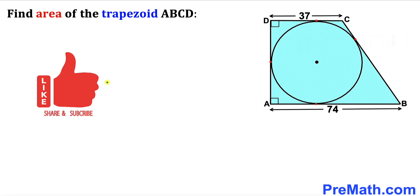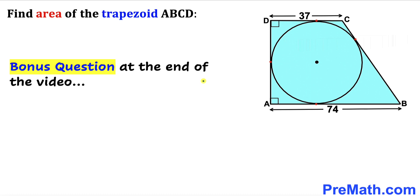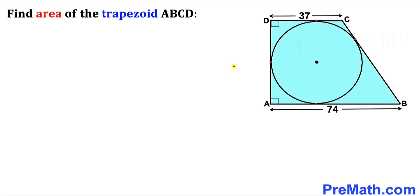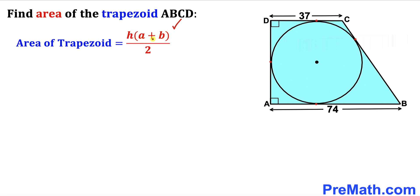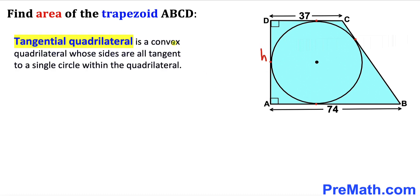Please don't forget to give a thumbs up and subscribe. Note that this figure may not be 100% true to scale, and there is a bonus question at the end of the video, so please watch till the very end. Since we want the area of trapezoid ABCD, let's recall the formula: H times (A plus B) divided by 2. We already have bases A and B, but we still need to find the height H.